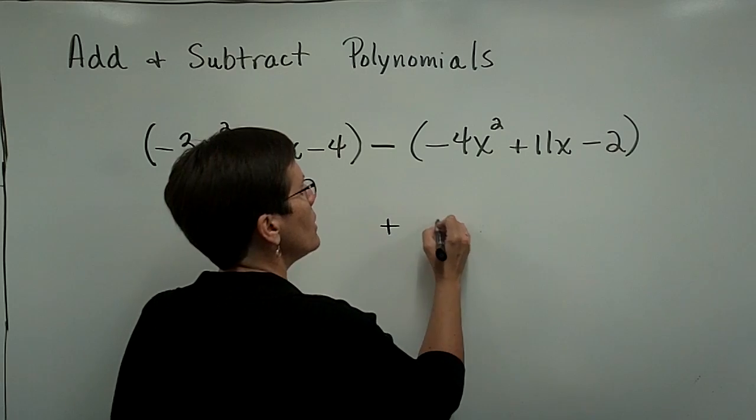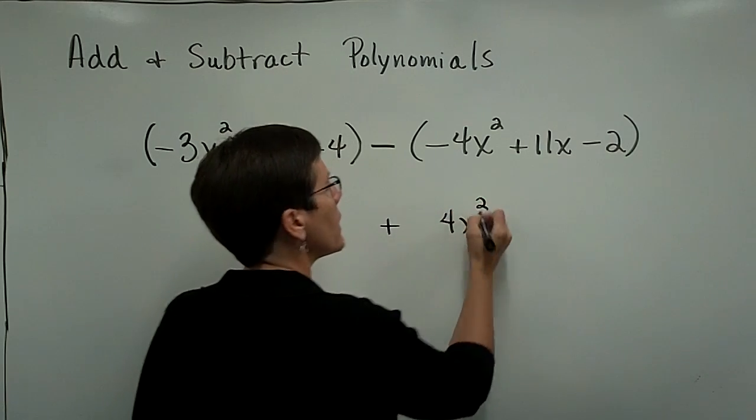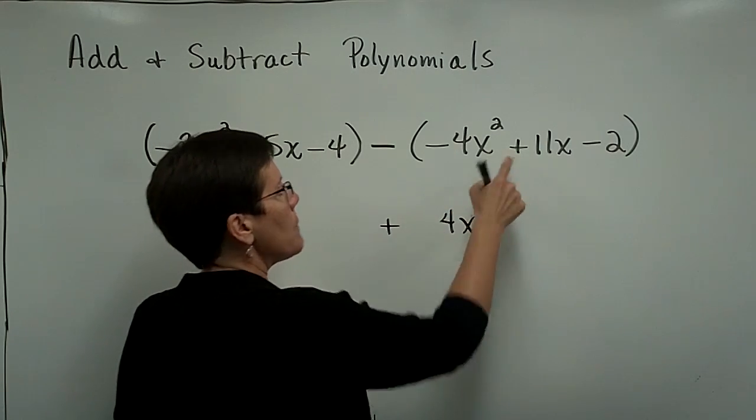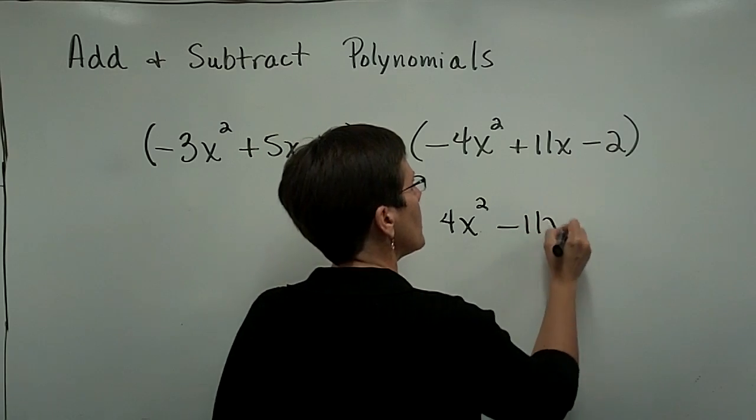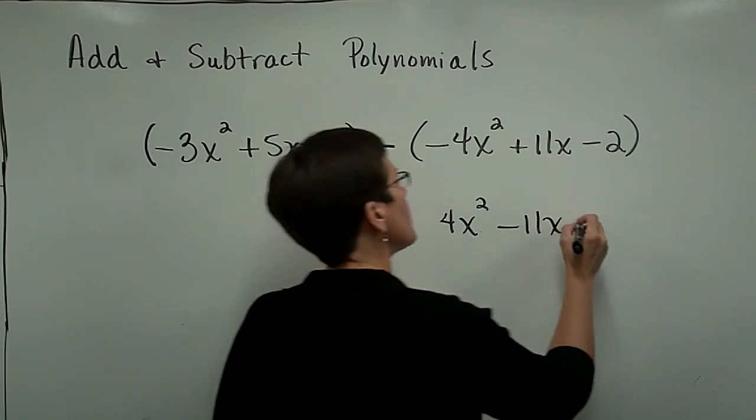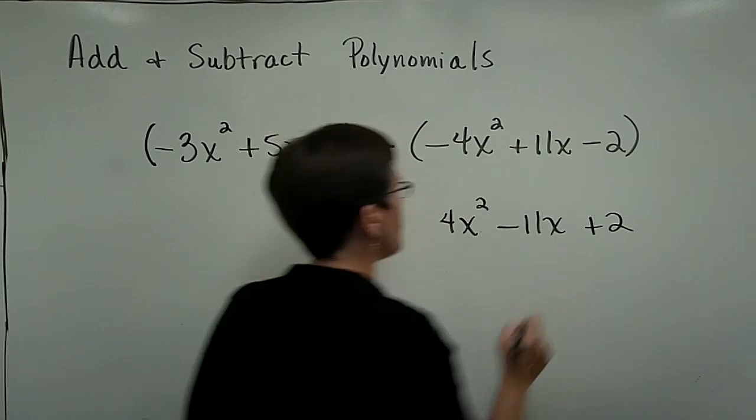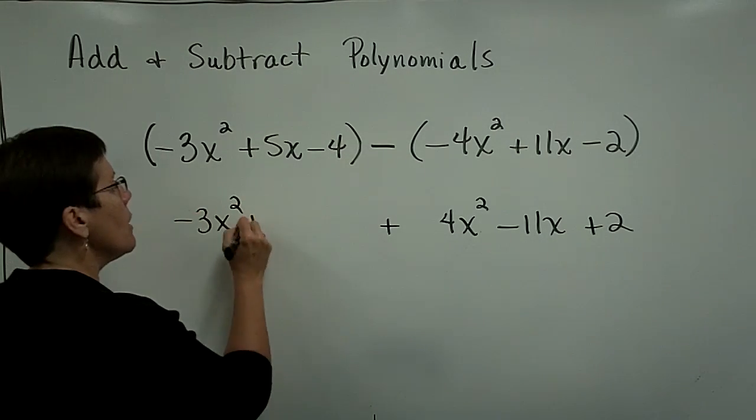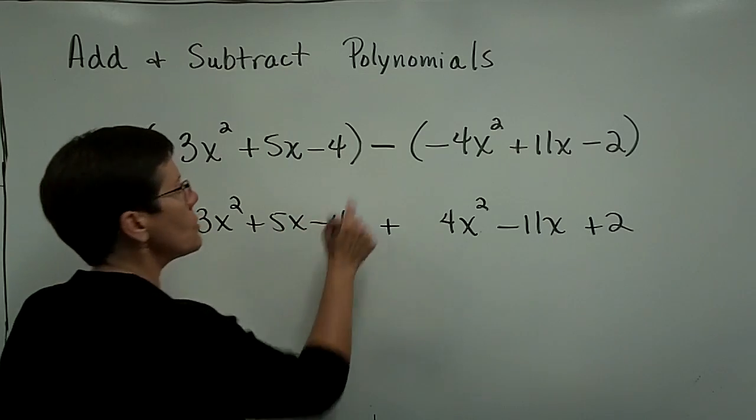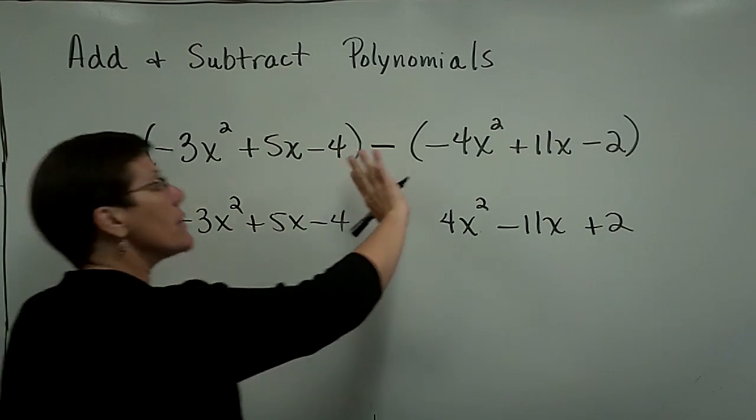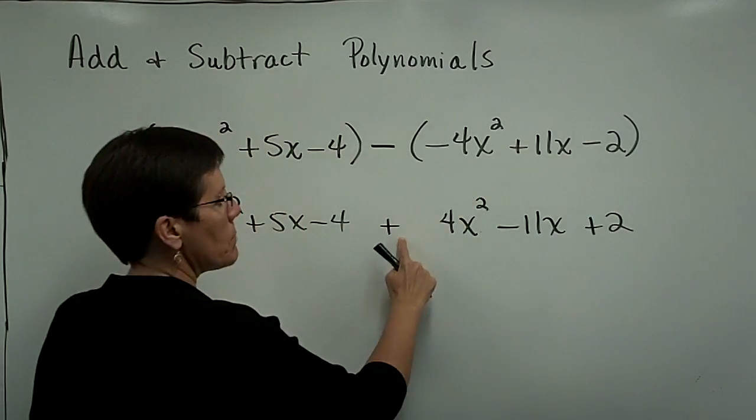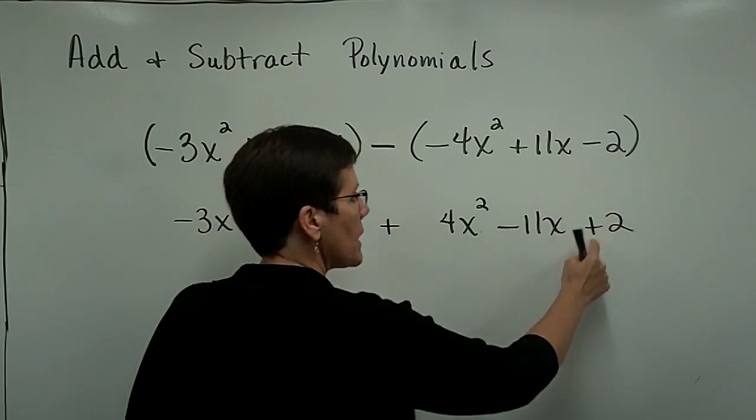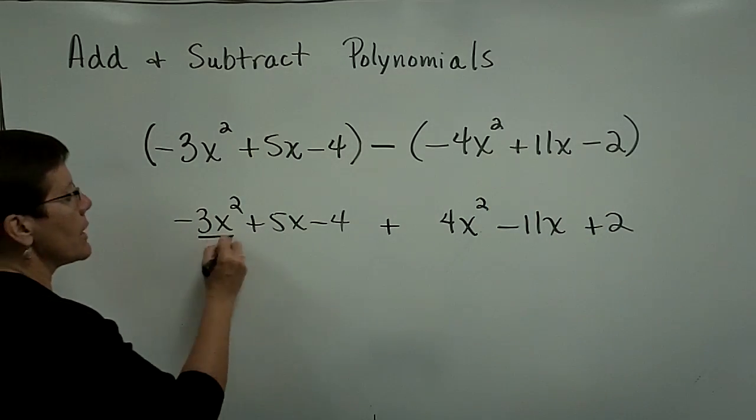So I'm going to add here a 4x squared. When I add the opposite of 11x, it will become a negative 11x. And when I add the opposite of a negative 2, that's going to become a positive 2. I'm going to drop the parentheses. They're really not necessary. But essentially, when subtracting, you add the opposite of all of those. That became positive. That became negative. That became positive. And now you collect your like terms.